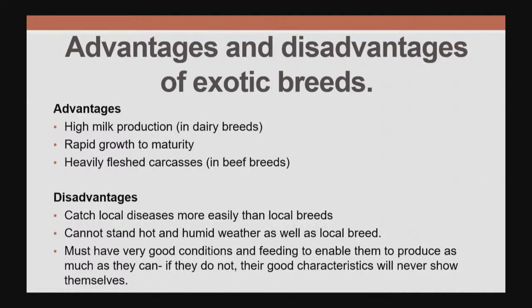We are looking to increase our milk production — these animals will give us high milk production. We are going to have rapid growth to maturity, for example in our broilers. And in the beef breeds, we are going to have heavily fleshed carcasses. However, students, because we are living in a tropical region and most of these breeds are coming out of temperate regions, there are some disadvantages.